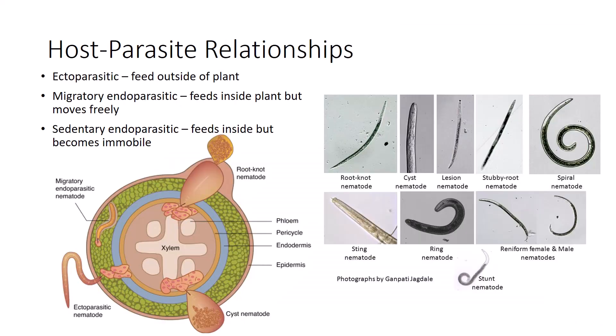Ectoparasitic nematodes feed on plant tissues from outside the plant, while endoparasitic nematodes feed inside the tissues. If the adult female moves freely through the soil or plant tissues, the species is said to be migratory. Species in which the adult females become swollen and permanently immobile in one place in or on a root are termed sedentary. Migratory endoparasitic and ectoparasitic nematodes generally deposit their eggs singly as they are produced, wherever the female happens to be in the soil or plant. Sedentary nematodes such as root knot, cysts, reniform, and citrus nematodes produce large numbers of eggs which remain in their bodies or accumulate in masses attached to their bodies. The feeding and living relationships that nematodes have with their hosts affect sampling methods and the success of management practices.